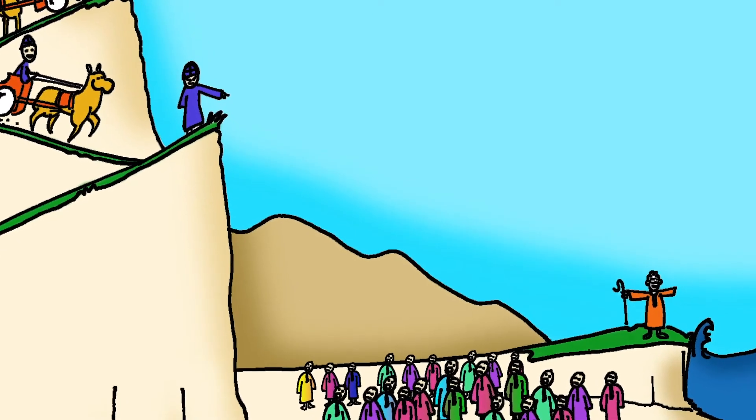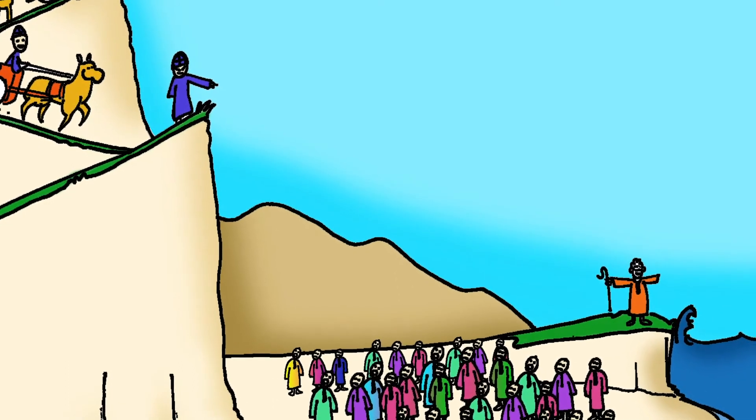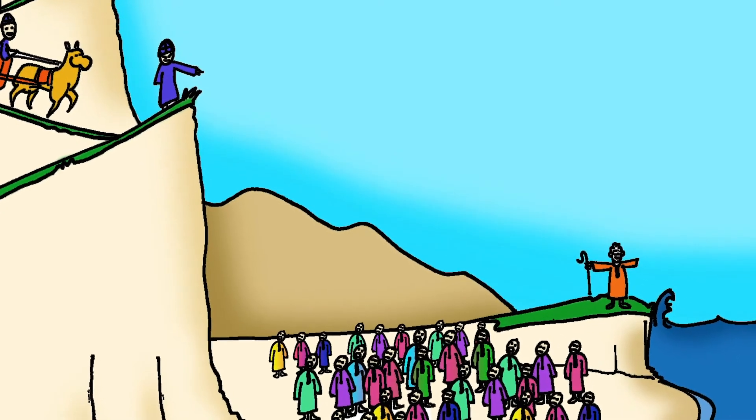They didn't have any boats, so they couldn't sail across it. And it was so wide, they couldn't swim across it. What would they do?